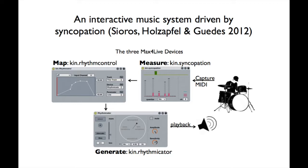A recent application is an interactive music system written around syncopation, presented at last year's ISMIR. It captures MIDI in real time, measures syncopation with the Kin Syncopation application that implements our algorithm, and the Kin Rhythm Control maps the density of events and syncopation to parameters controlling the Kin Rhythmicator. So you can play on a MIDI pad or any instrument with MIDI output and make the Rhythmicator react to what you're doing in real time. That's basically, in a nutshell, what we've been doing in Porto.